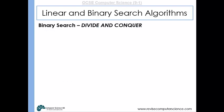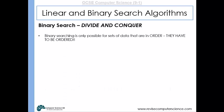The binary search is another search algorithm that uses the principles of divide and conquer. Importantly, when doing a binary search the data set must first be in order. If given an exam question asking whether to use a linear or binary search on unordered data, a linear search would be the only option, because a binary search requires ordered data.